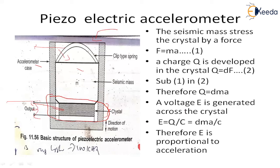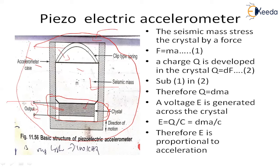When this accelerometer is subjected to acceleration, the seismic mass stresses the crystal by a force F equal to ma. Whenever this mass stresses the crystal by a force, a voltage is developed across the crystal — let us call it E. We need to show that this voltage E is proportional to acceleration.